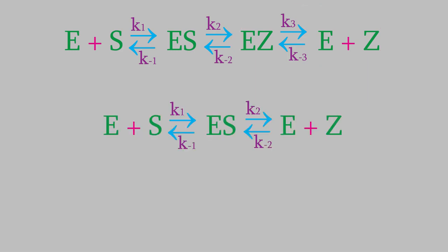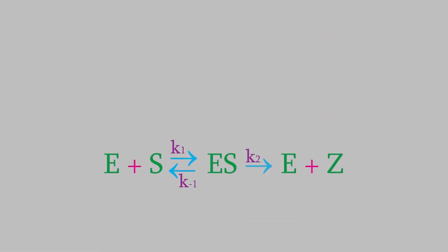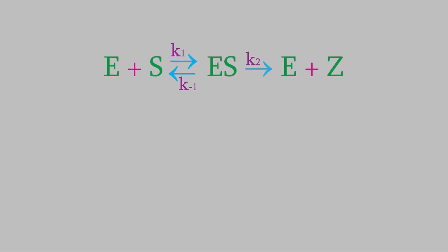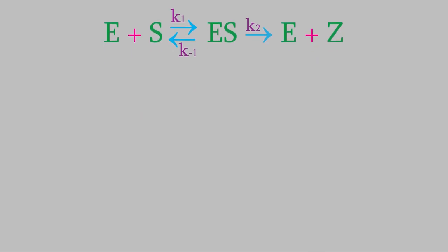Another important simplification comes because the second reaction actually isn't reversible. The enzyme and product never recombine to give us back the substrate. That means the second reaction is an irreversible reaction in the forward direction. Finally, the third and most important approximation we can make is the steady-state approximation.